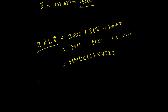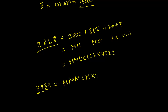Now let's write 3939. First, 3000 is MMM. Then 900 (a 9 in the hundreds position) is CM. Then 30 (a 3 in the tens position) is XXX. And 9 in the ones position is IX. So 3939 is MMMCMXXXIX.